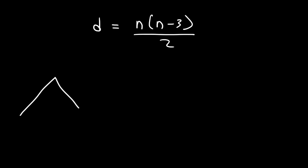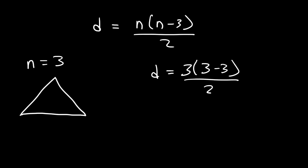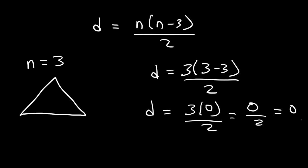Let's start with a triangle. A triangle is a three-sided figure, so n is equal to 3. Now 3 minus 3 is 0, and 0 times 3 is 0, and 0 divided by 2 is 0. So in this figure we cannot draw any diagonals. If we start here and try to draw to another vertex, that's not a diagonal — it's a side of the triangle. So a triangle has zero diagonals.